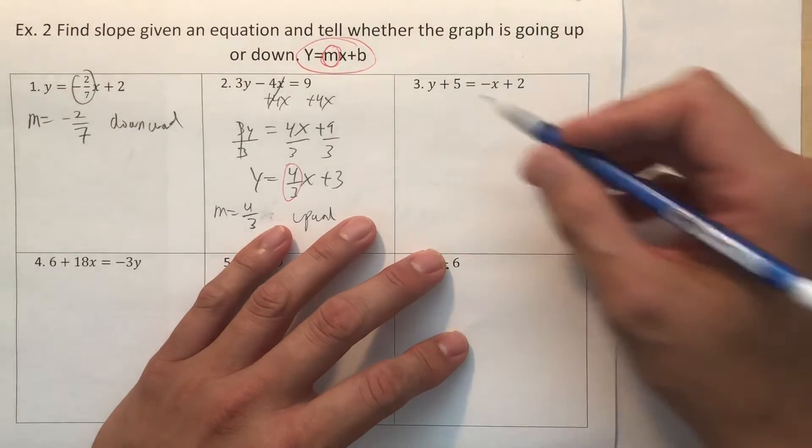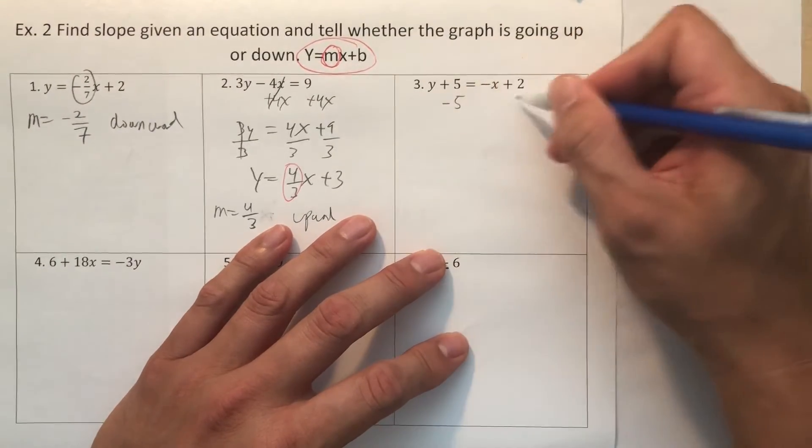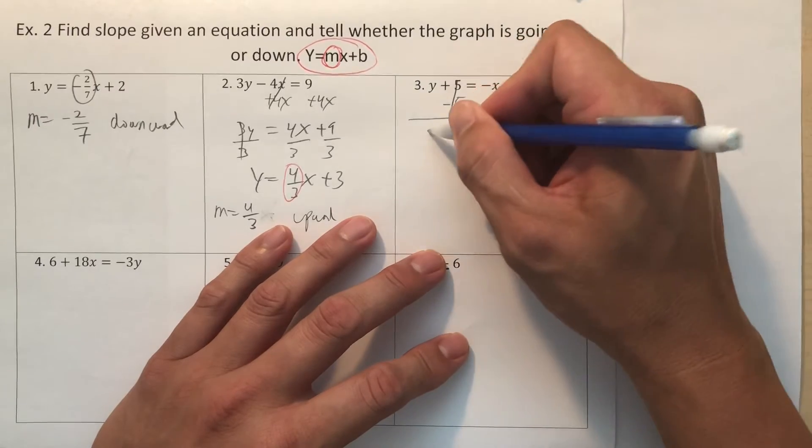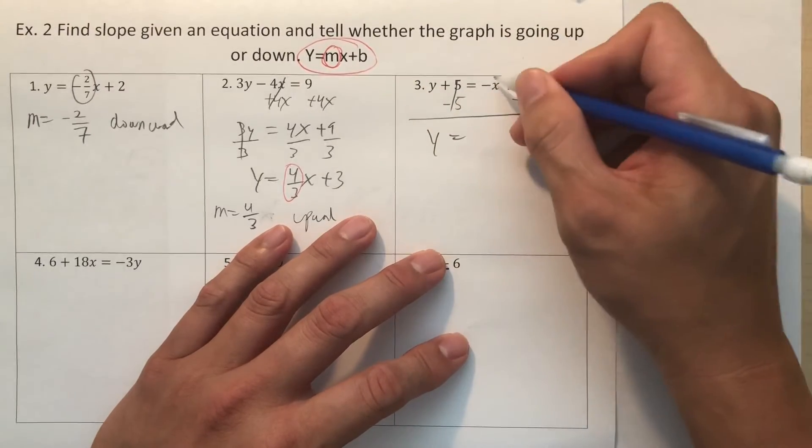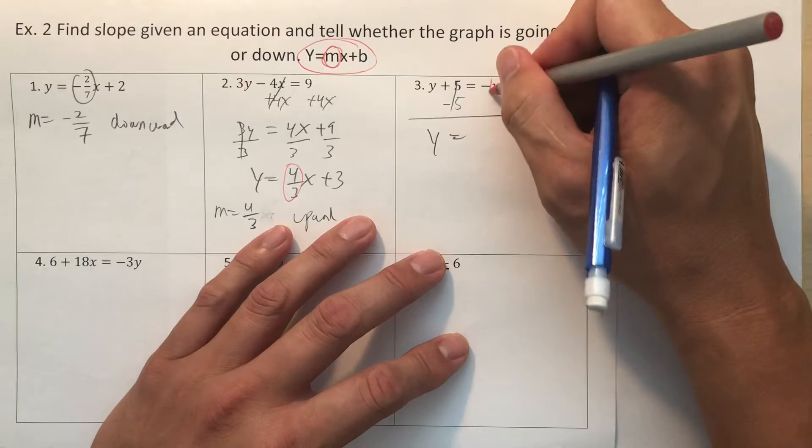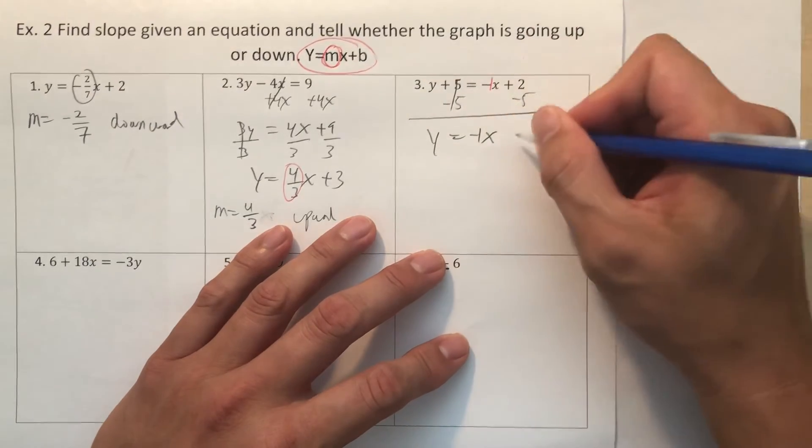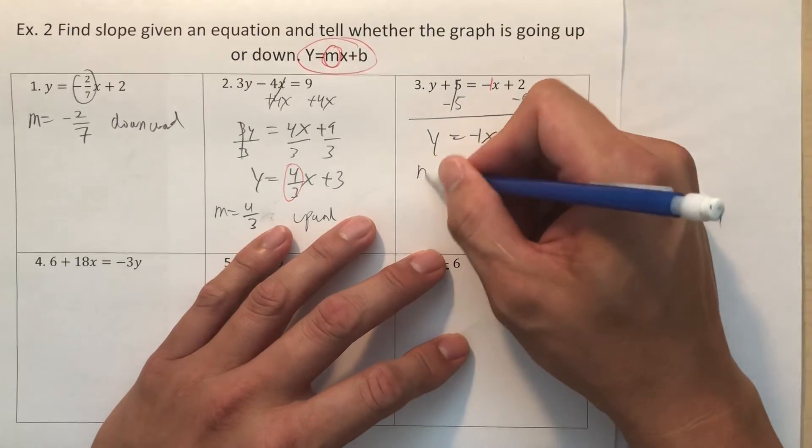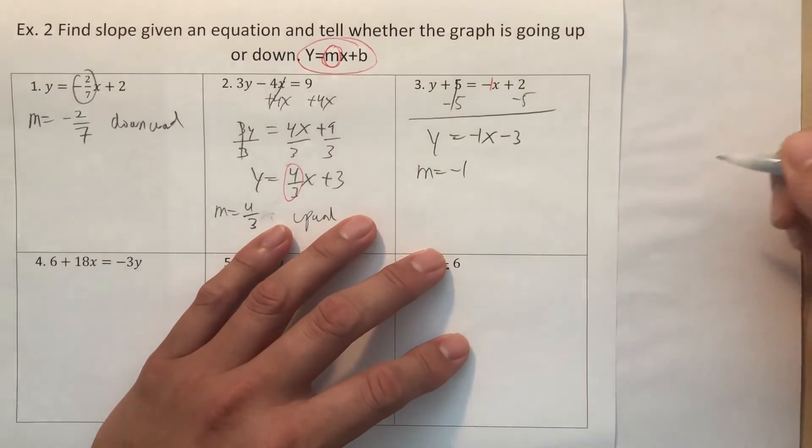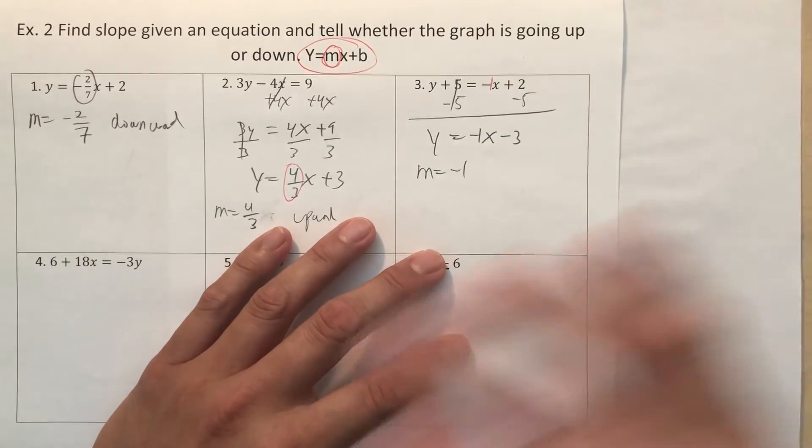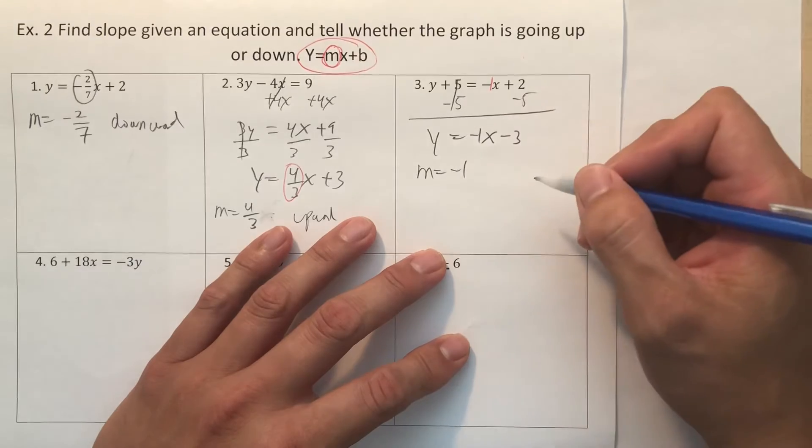Now this one over here, number 3, let's go ahead and solve for y. This one's a simple subtract by 5 to both sides. Let's put a 1 right here. I call it the phantom 1. It's sort of like it's there, but you don't see it. So negative 1x minus 3. Again, you should know your slope now. It's negative 1, and this one exactly goes right through the middle of the graph.